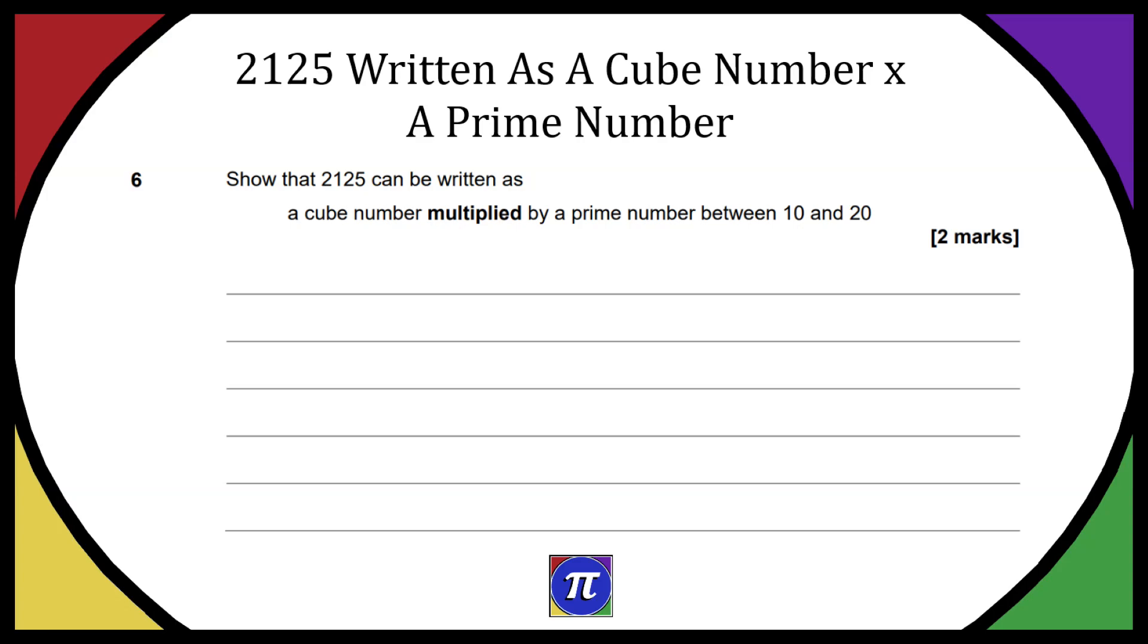So we have question number six from the past paper, link down below, and we need to show that 2125 can be written as a cube number multiplied by a prime number between 10 and 20.